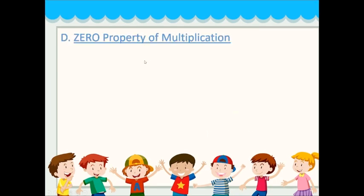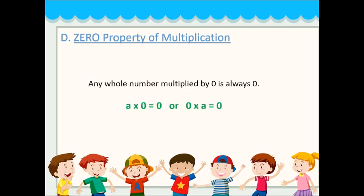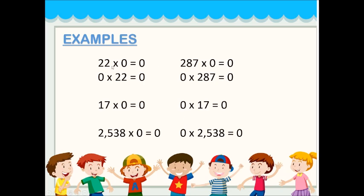Next is the zero property of multiplication, where any whole number multiplied by 0 is 0. So A times 0 equals 0, or 0 times A equals 0. Examples: 22 times 0 is 0; 287 times 0 is 0; 17 times 0 is 0; 2538 times 0 is 0. No matter how large the number, once you multiply it by 0, the answer is always 0.